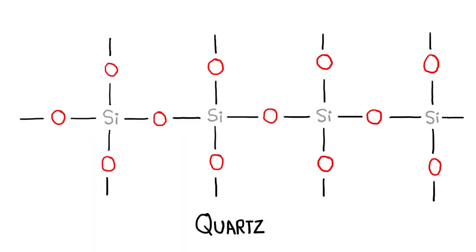But zircon also has two things quartz doesn't – zirconium, which gives it its name, and small traces of radioactive uranium. Uranium atoms are similar enough to zirconium that they can occasionally slip into the mineral's crystal lattice in zirconium's place when the mineral is forming. But unlike zirconium, the unstable uranium atoms eventually radioactively decay into lead atoms.